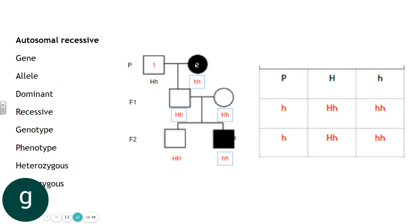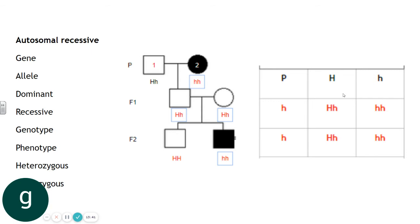We use a Punnett square to work out the likelihood of particular genotypes and phenotypes in offspring. For a cross between a heterozygote (big H, small h) and a homozygous recessive (small h, small h): the homozygous recessive parent always passes on a small h, so we can simplify — 50% of the time the heterozygous parent passes on the dominant allele giving a heterozygote with dominant phenotype, and 50% gives homozygous recessive. So 50% dominant phenotype, 50% recessive phenotype.